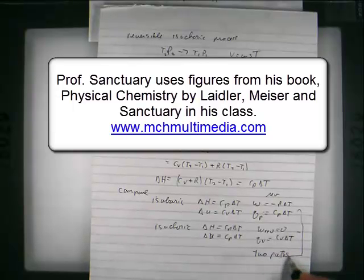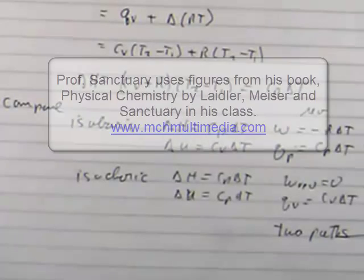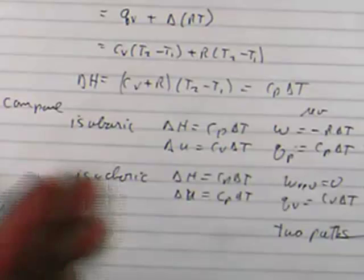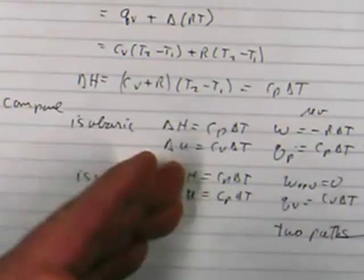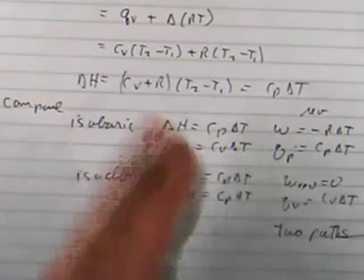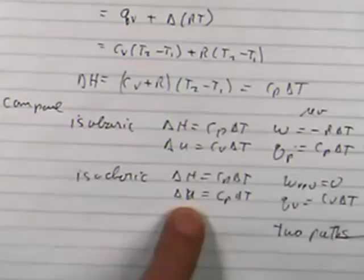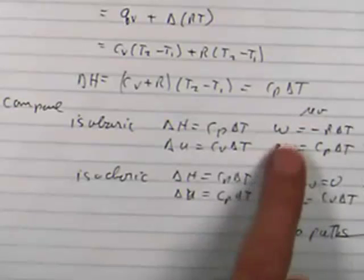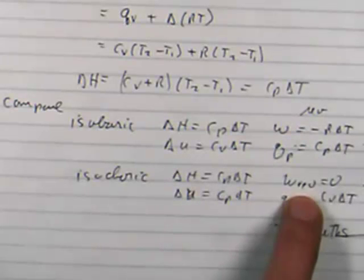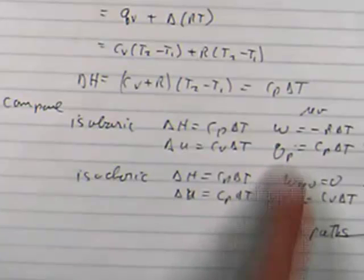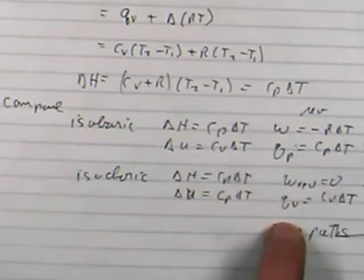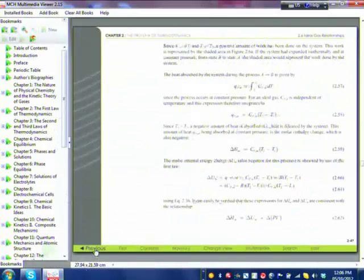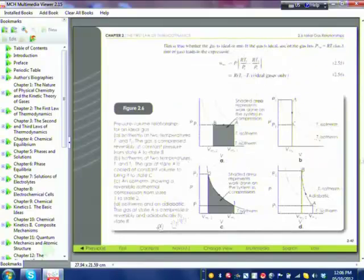What we're saying is that in the isobaric and isochoric processes, delta H and delta U are the same if we go between the same temperatures. The change in enthalpy and internal energy are equal, but through two different paths. In one path the work is not zero, and in the other path the work is zero. In one path the heat is Q_P and in the other path the heat is Q_V.